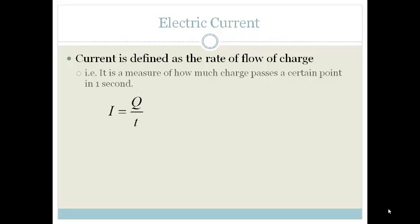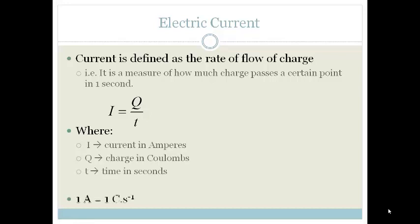The equation for it is I equals Q over T, where I is current in amperes, Q is charge in coulombs, and T is time in seconds. Please note that these are the SI units. So one ampere can therefore be defined as one coulomb per second.